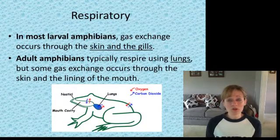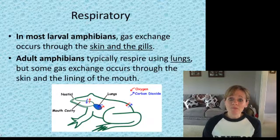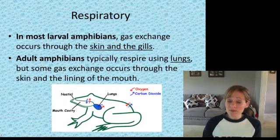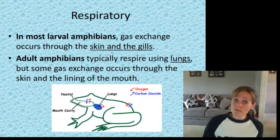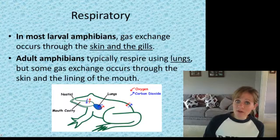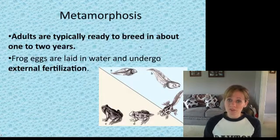For respiration, amphibians are no longer in the water as adults, so they don't need gills, but they need something to breathe. They use lungs, and they also have gas exchange through their skin and the lining of the mouth. As larvae in the water they would have gills, but then they undergo metamorphosis.